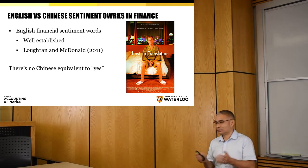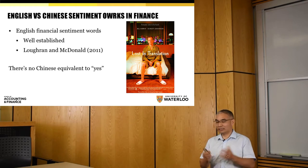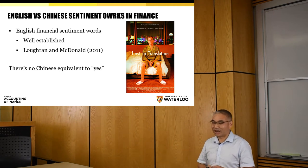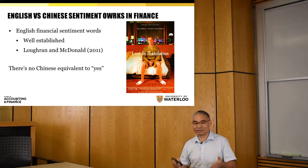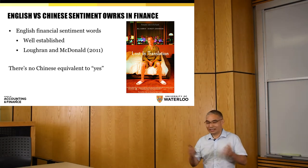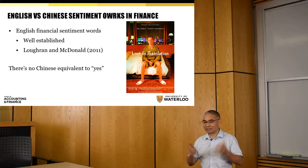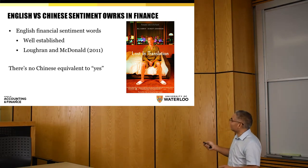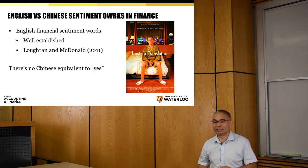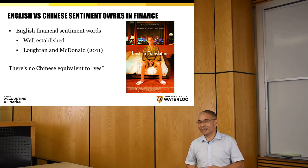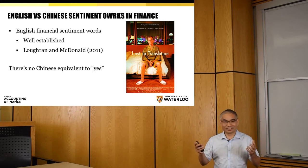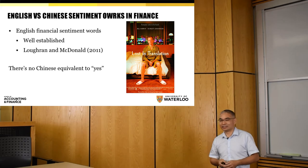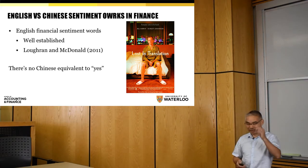You cannot simply translate Loughran and McDonald's list into Chinese. If you ever watched the movie Lost in Translation, the star Bill Murray was kind of lost in Tokyo, totally lost in translation because he couldn't understand the subtleties in the languages. In Chinese, there are a lot of subtleties — for example, if you try to translate the simple English word 'yes' into Chinese, there are at least seven different variations of yes, but no single term for yes in Chinese.